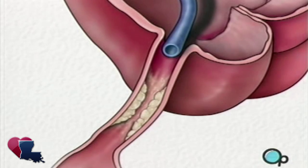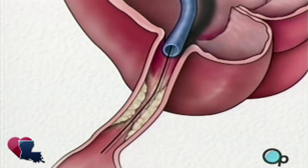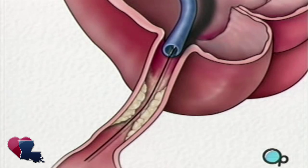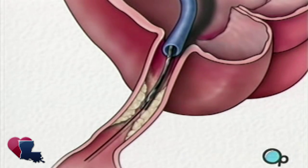Once the restricted area has been identified, a thin wire is inserted into the catheter and is guided all the way to the blocked area and then slightly beyond. This wire acts as a guide for the balloon catheter. It allows your doctor to position the deflated balloon precisely in the middle of the narrowest part of the coronary artery.